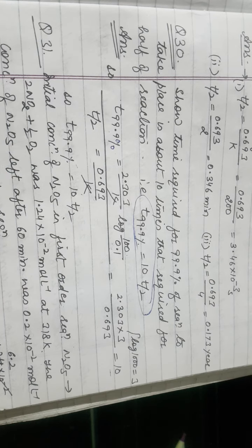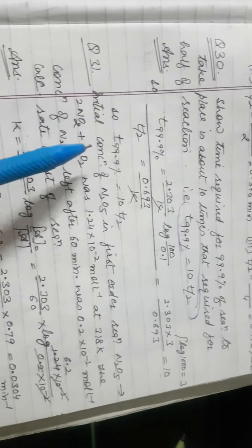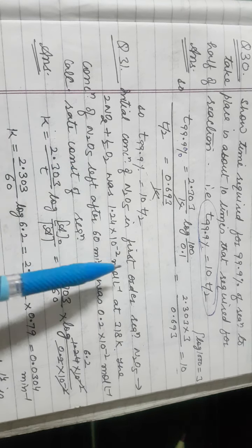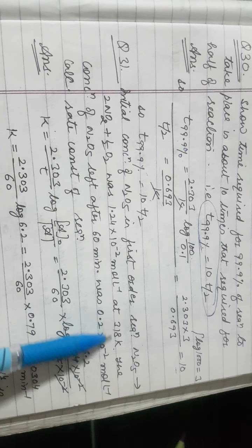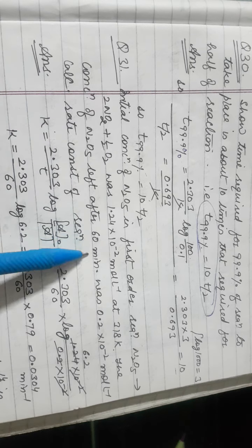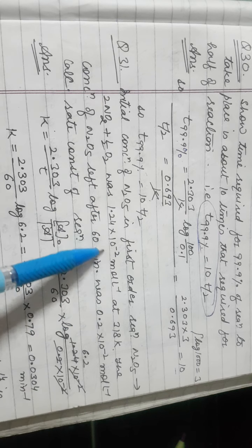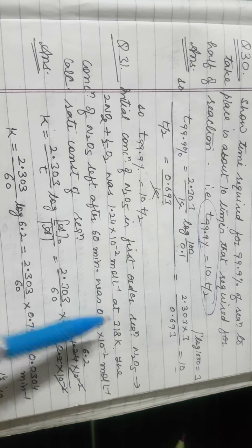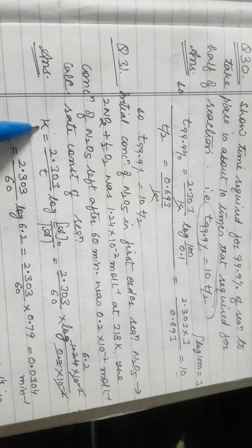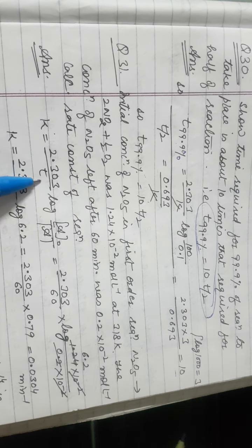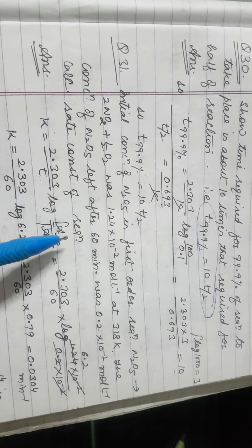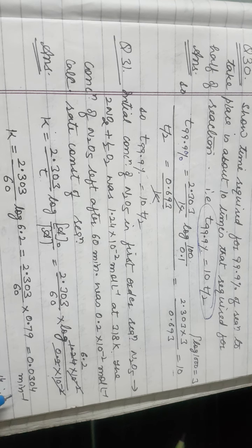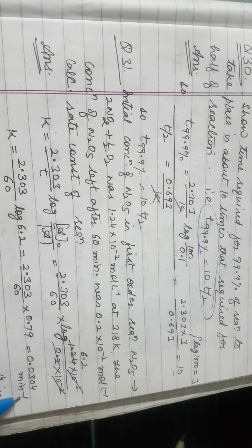Next question: Initial concentration of N₂O₅ in a first order reaction at 318 K is given. The concentration remaining after 60 minutes is given. Since time T = 60 minutes and A₀ and A are both given, we can calculate K = (2.303/60) × log(A₀/A) and compute the answer.